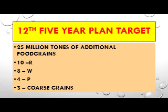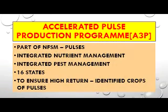The 12th Five Year Plan aims to achieve 25 million tons of additional food grain — 10 million tons of rice, 8 million tons of wheat, 4 million tons of pulses, and 3 million tons of coarse grains.